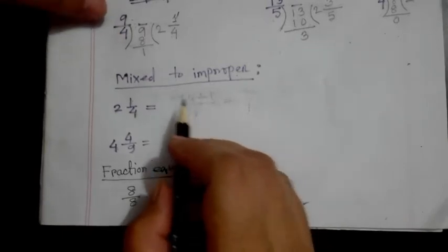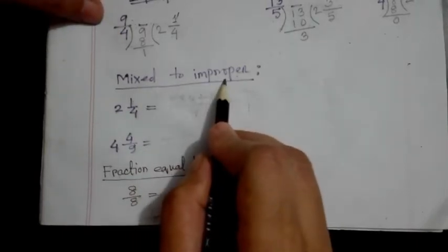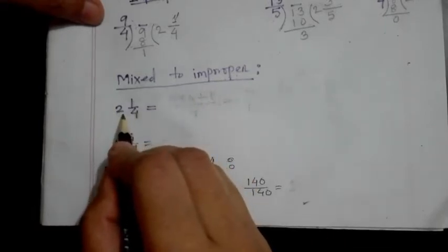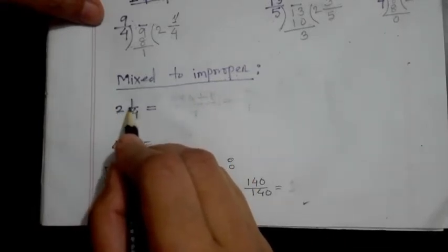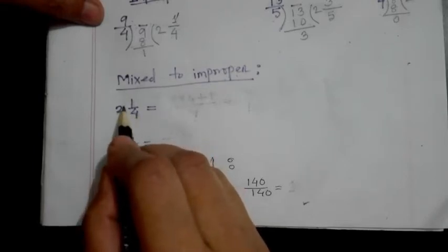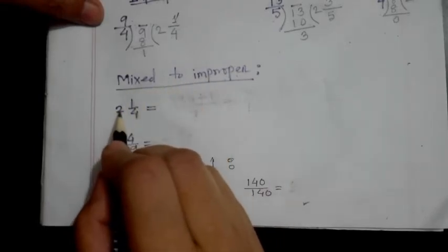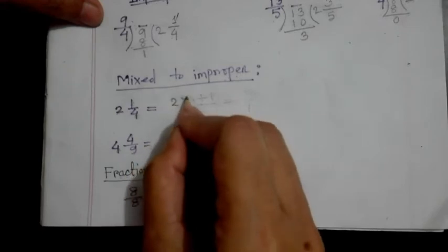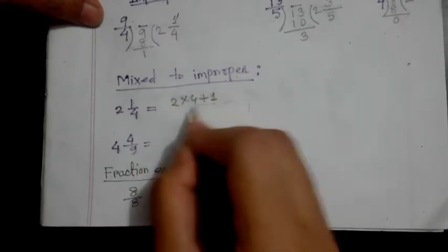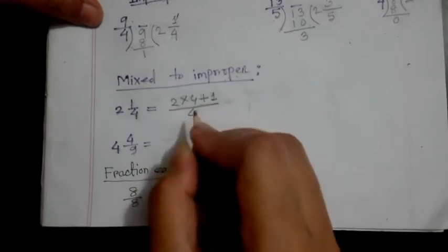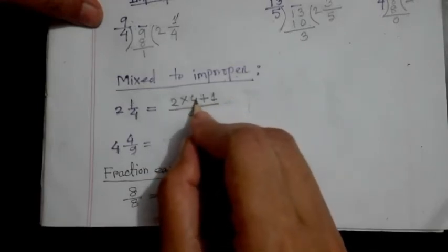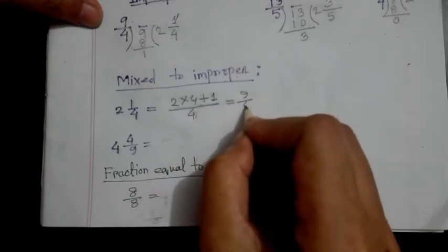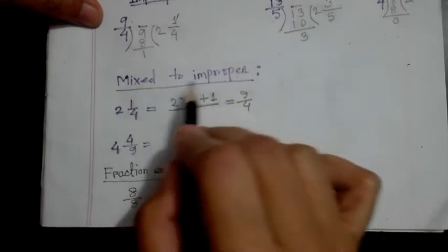Now we learn how to convert mixed to improper fraction. I write an example of a mixed fraction: 2 whole 1 by 2. To convert mixed to improper fraction, first we have to multiply the integer with the denominator, and then the result will be added with the numerator. I write here 2 multiplied by 4 plus 1, over 4. Calculate: 2 times 4 is 8, 8 plus 1 equals 9. So the answer is 9 by 4. In this way you can convert mixed to improper fraction.